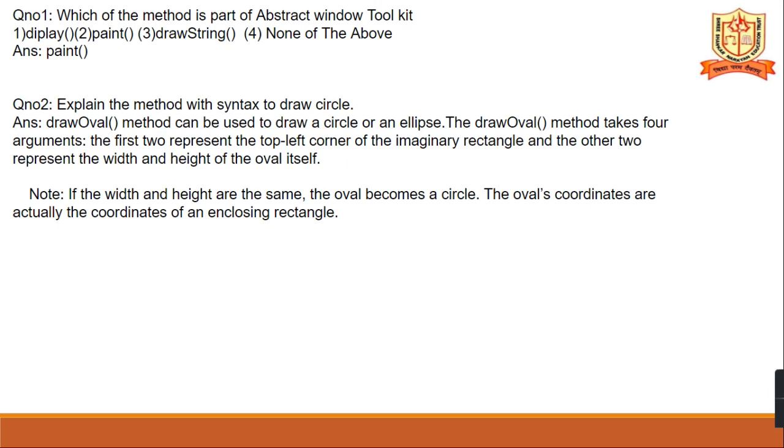Explain the method with a syntax to draw the circle. Draw oval method can be used to draw the circle or ellipse. The draw oval method takes four arguments. The first two represent the top left corner of the imaginary rectangle and other two represent the width and height of the oval itself.